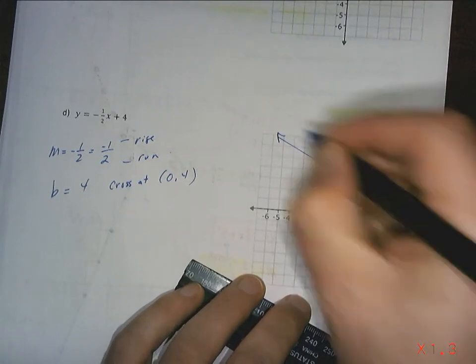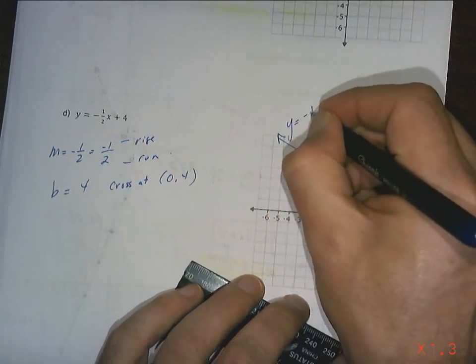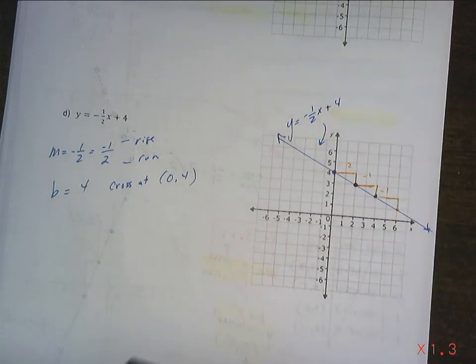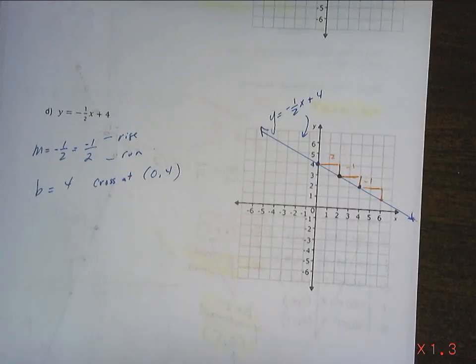I've got a line. I'm going to label the line y equals negative one half x plus four. And you are done, ladies and gentlemen. That's all she wrote.